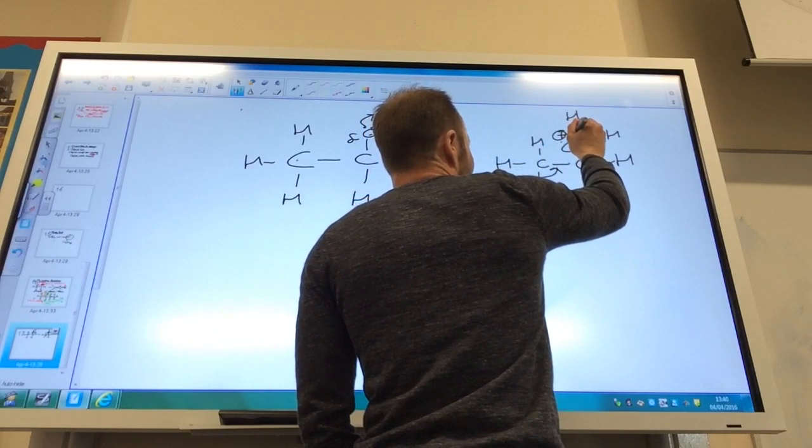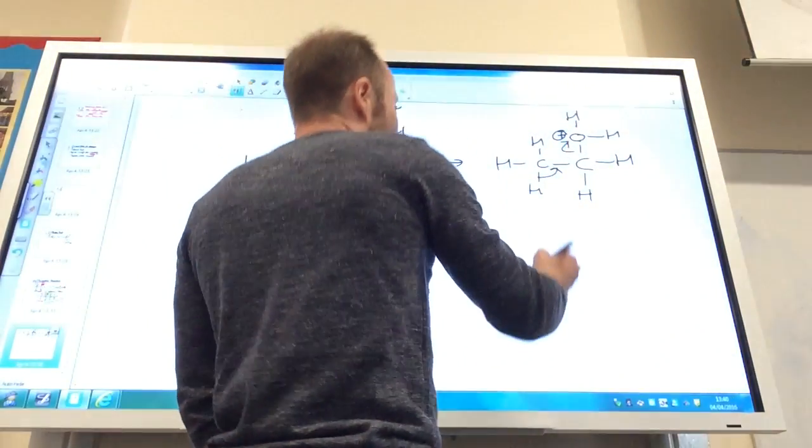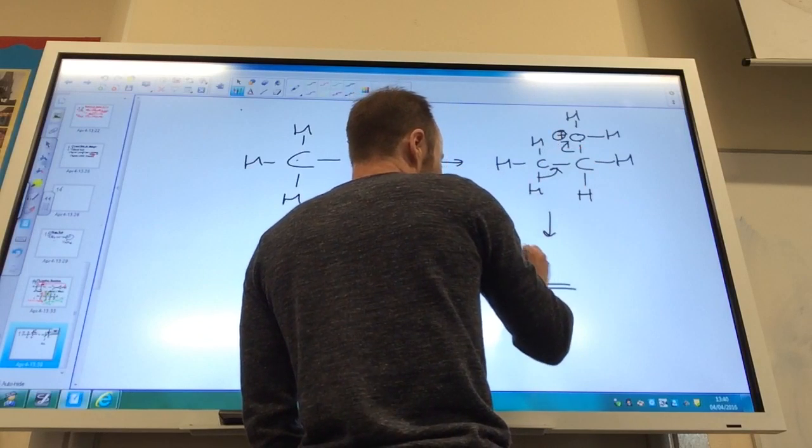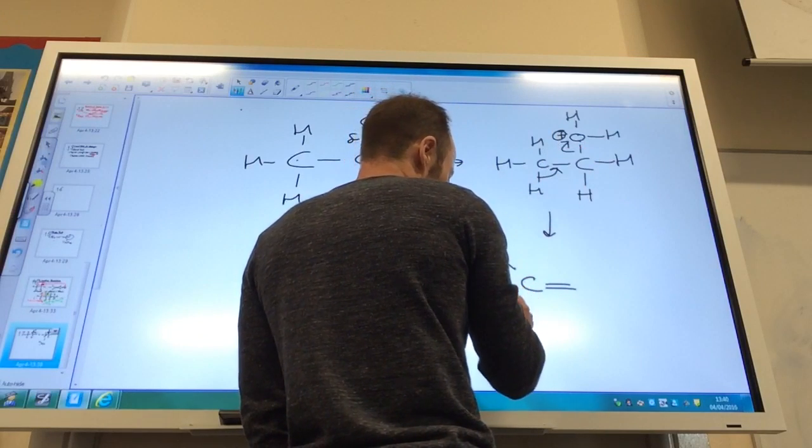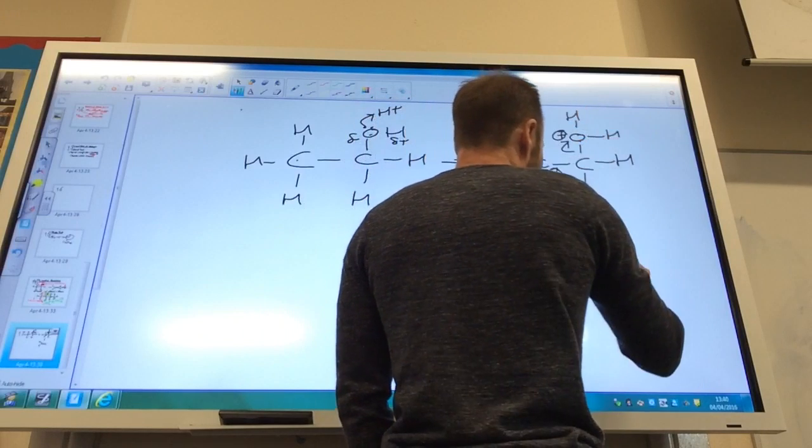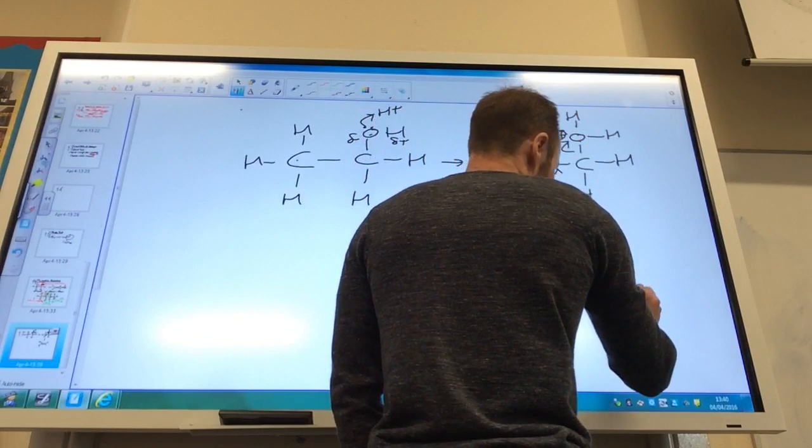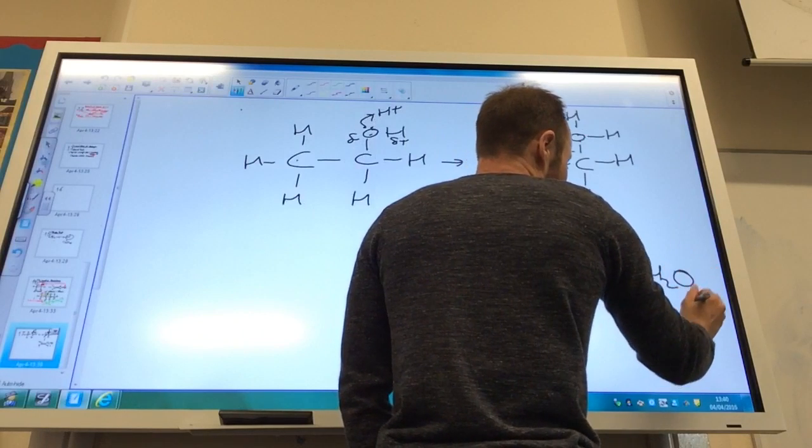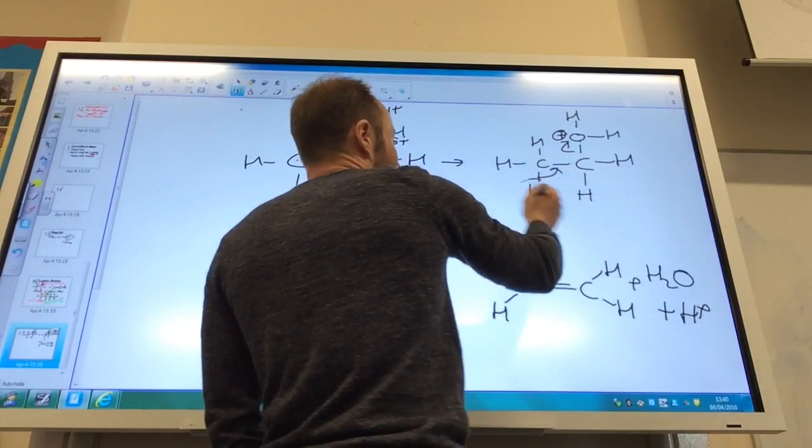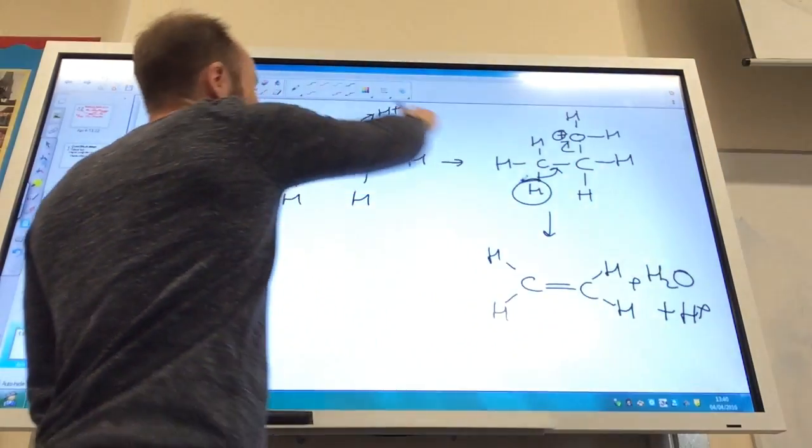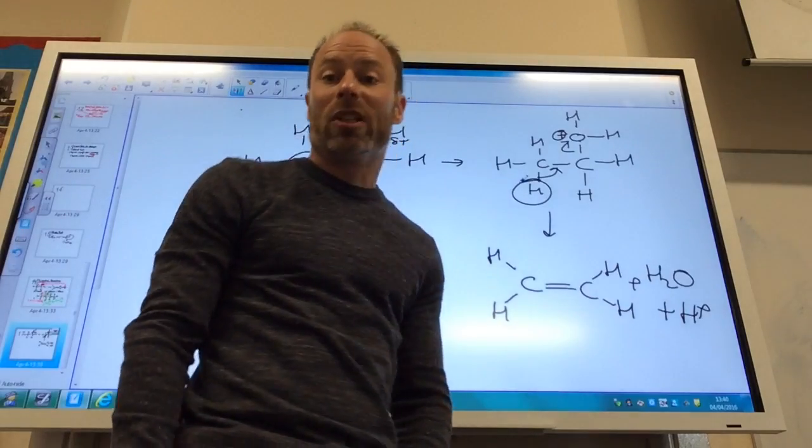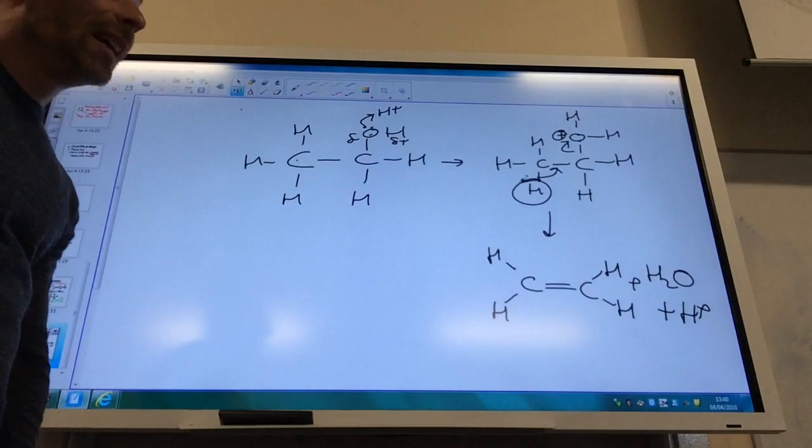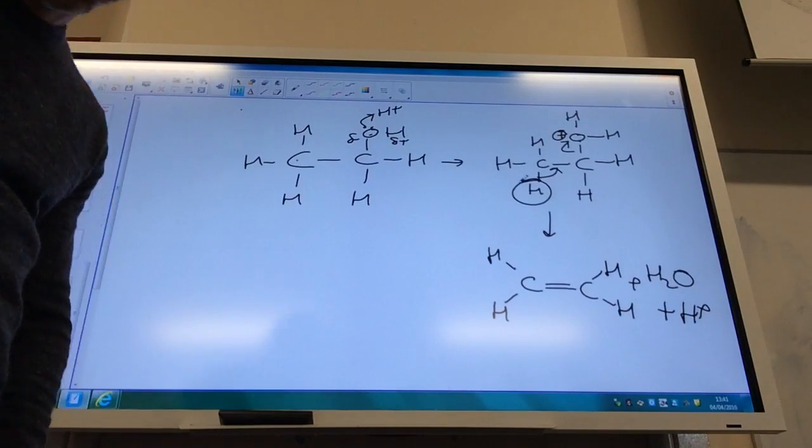And the water leaves and the electrons go back to the oxygen atom there. So that gives me, those electrons have now formed that double bond there. That water has gone. So I've made ethene plus water plus H+, which has come from there. So you can see how all the H+ is being regenerated, which is why it is a catalyst. And that's the mechanism for the dehydration of ethanol.